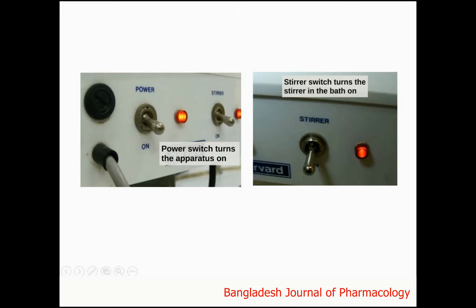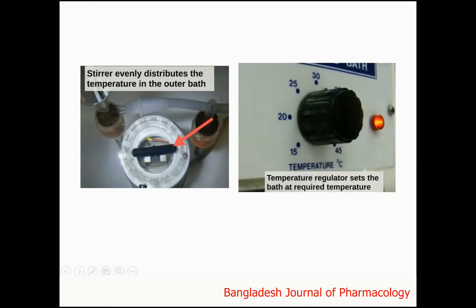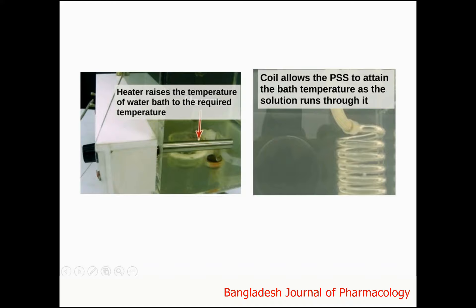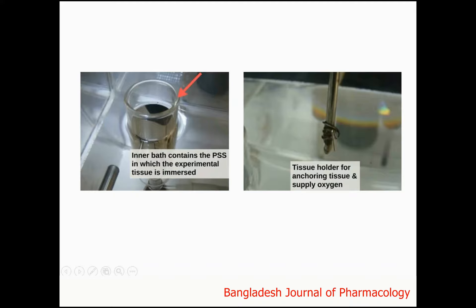The power switch turns the apparatus on. The stirrer switch turns the stirrer in the bath on, and the stirrer evenly distributes the temperature in the outer bath. The temperature regulator sets the bath at the required temperature, and the heater raises the temperature of the water bath to the required temperature. The coil allows the physiological salt solution to attain the bath temperature as the solution runs through it. The inner bath contains the physiological salt solution in which the experimental tissue is immersed.